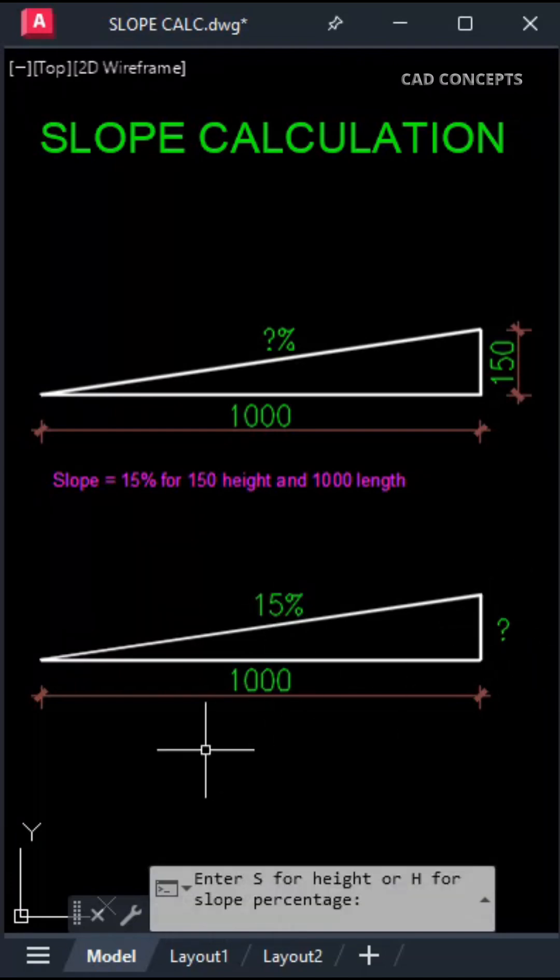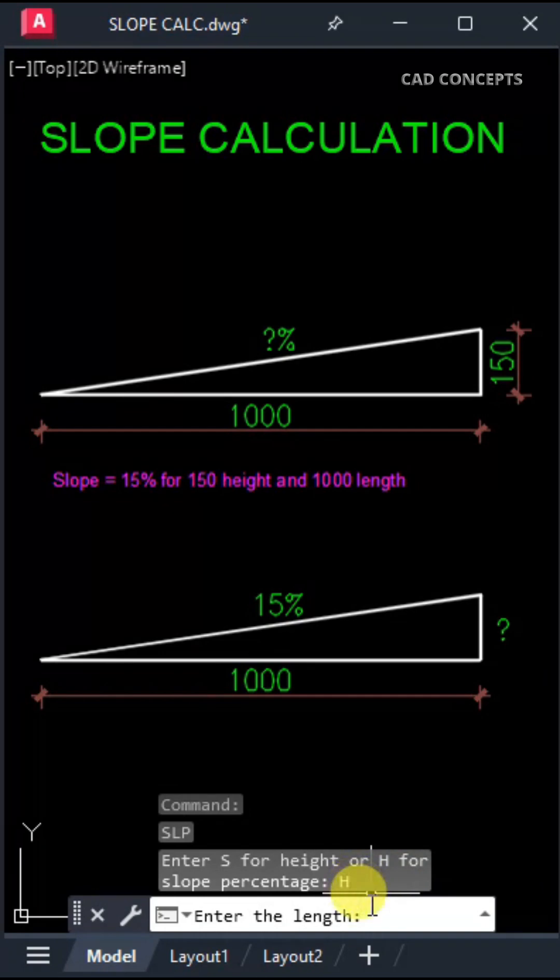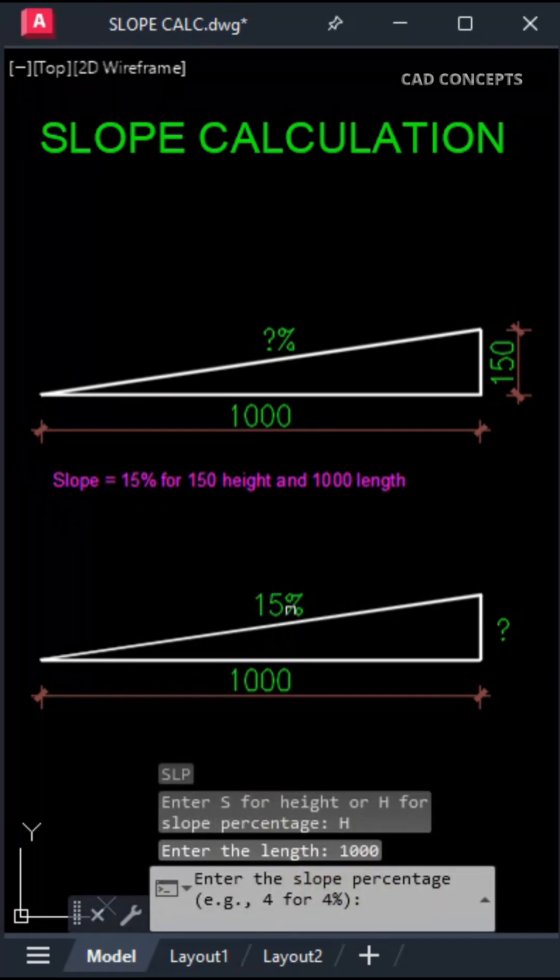Height we don't have but percentage we have. Now input H, length 1000 unit, percentage 15.